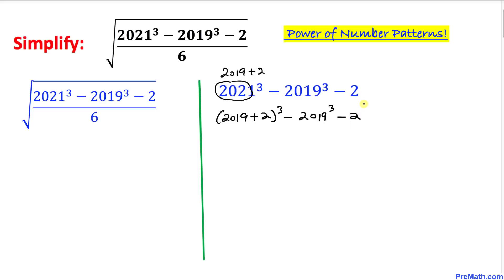Now let's focus on this expression over here. These terms 2019 and 2019 are the same, so I'm going to use this trick: let x equal 2019. I'm going to use a substitution method so we can write this one as (x + 2)³ minus x³ minus 2.